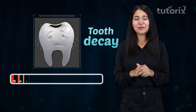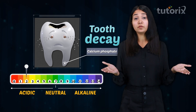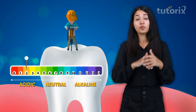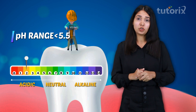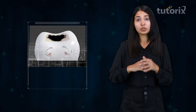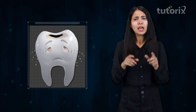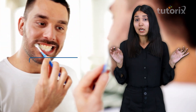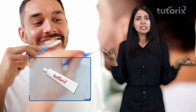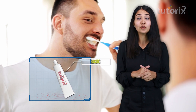Tooth decay starts whenever the pH value becomes lower than 5.5. The tooth enamel is made up of calcium phosphate and is considered the hardest substance in our body. When the pH in our mouth goes below 5.5, the teeth get corroded. That's why it is advised to clean the mouth, avoid sugary foods, and use toothpaste which is basic in nature to neutralize the excess acid and prevent tooth decay.